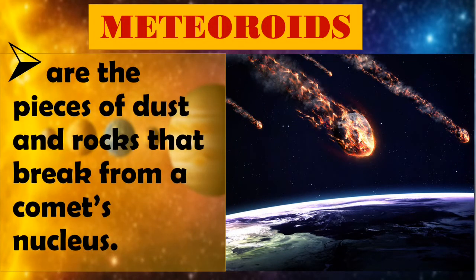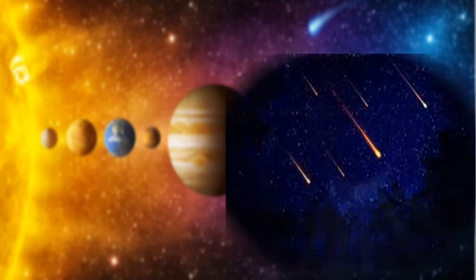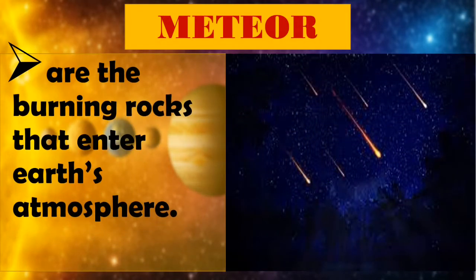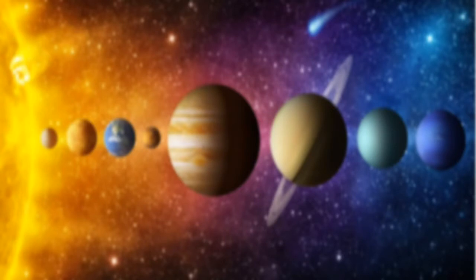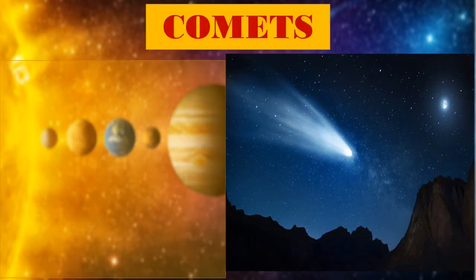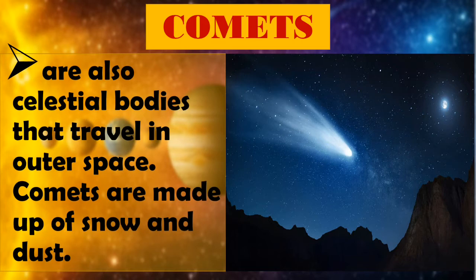Meteorites are the pieces of dust and rocks that break from a comet's nucleus. Meteors are the burning rocks that enter Earth's atmosphere. Comets are also celestial bodies that travel in outer space. Comets are made up of snow and dust.